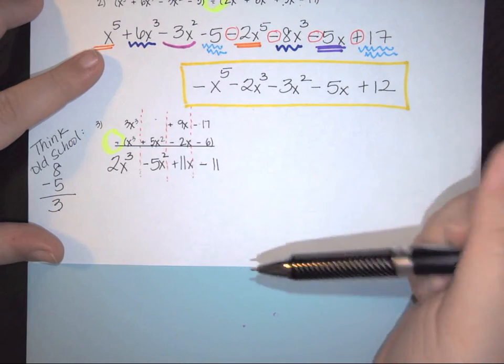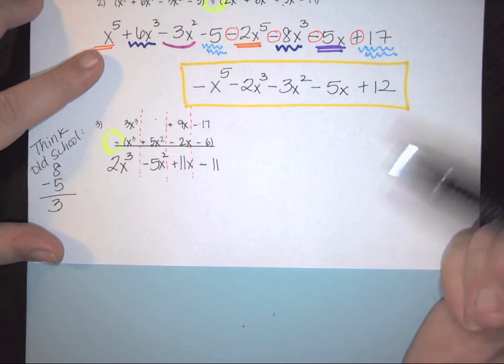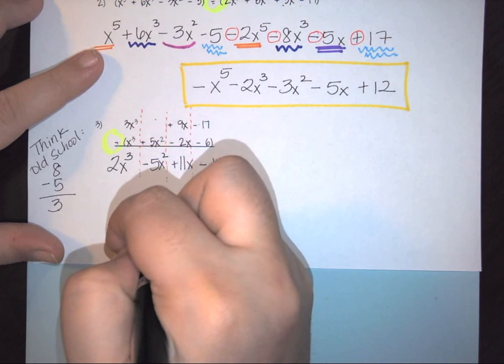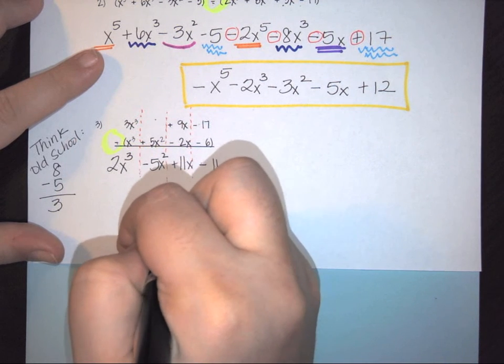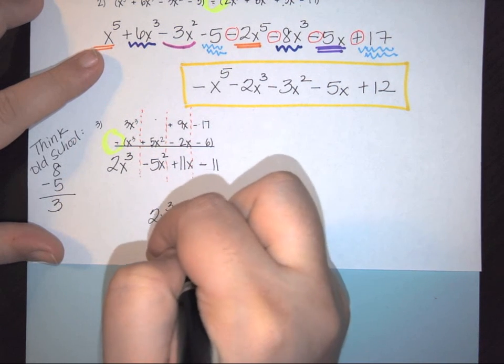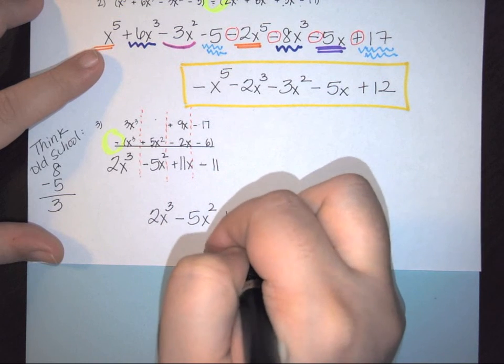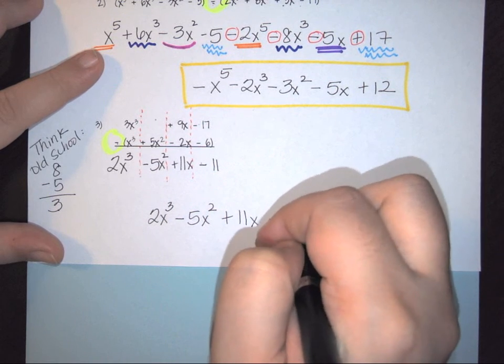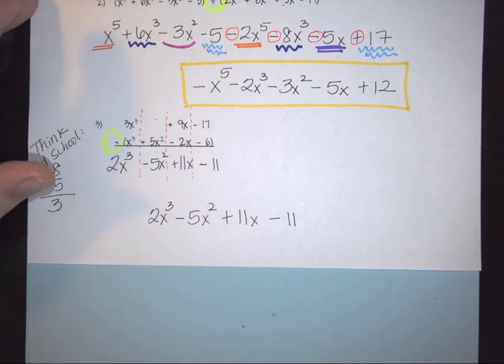Since we did everything vertically, we were able to look at them as just one piece at a time. And so then here we have 2x cubed minus 5x squared plus 11x minus 11. And there you have it.